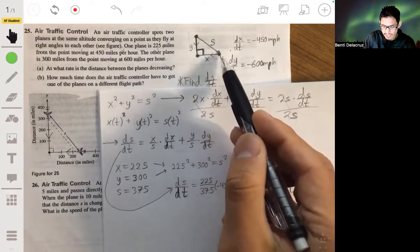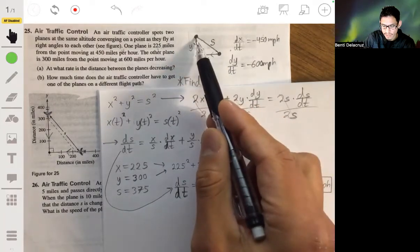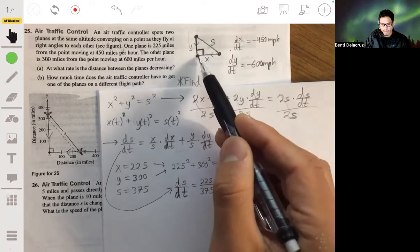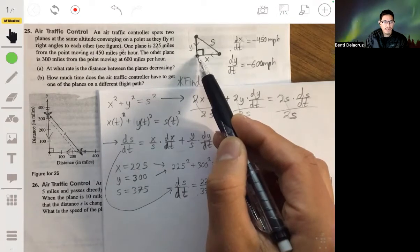So remember, S is the distance between the planes. So essentially when the distance between the planes is zero, both planes are at the same point, and that's when they would potentially crash. So we want to find when would S be zero, when would they both be at the same point?